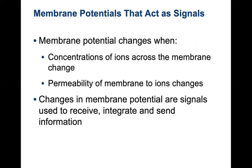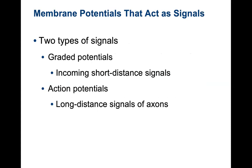The membrane potential will change when concentration of ions across the membrane change. The permeability of the membrane to the ion changes could also cause membrane potential change. Changes in membrane potential are signals used to receive, integrate, and send information along the central nervous system, and as we saw, even with the muscles. There are two types of signals: graded potentials, which are incoming short-distance signals dependent on the strength of the signal, and action potentials, which are long-distance signals down the axons — with no strong or weak action potentials.